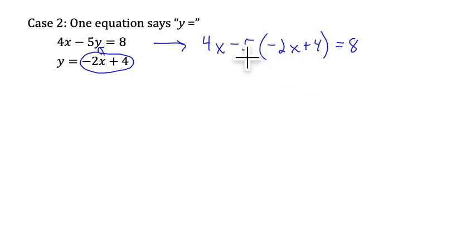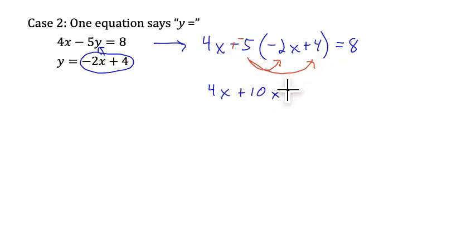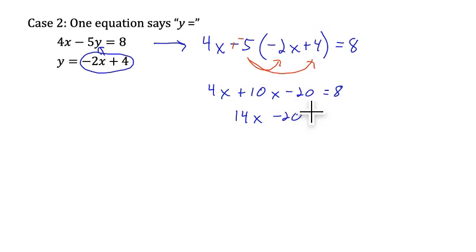We will carefully use the distributive property to get rid of the parentheses. The safest way is to change minus 5 to plus negative 5, emphasizing that we are distributing a negative 5. The 4x tags along. Negative 5 times negative 2x is positive 10x, and negative 5 times positive 4 is negative 20. We have like terms to combine on the left side, then use inverse operations to solve for x.